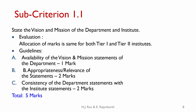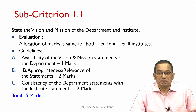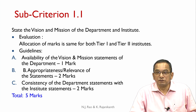Let us look at sub-criterion 1.1: state the vision and mission of the Department and Institute. The allocation of marks is the same for both Tier 1 and Tier 2 Institutes. The evaluation guidelines are: the department must make available to the visiting team the vision and mission statements of the department — 1 mark; appropriateness and relevance of the statements — 2 marks; consistency of the department statements with the institute statements — 2 marks; totaling 5 marks.